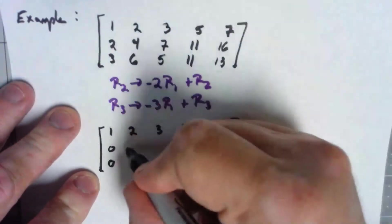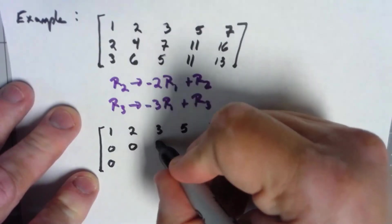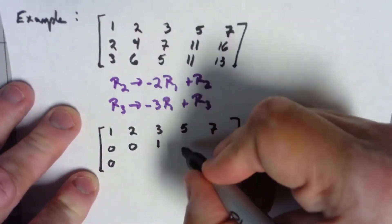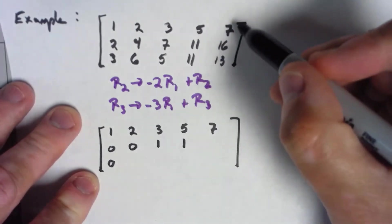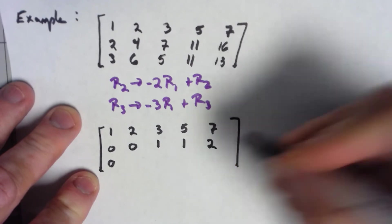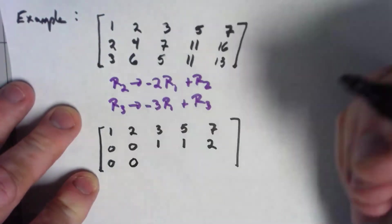Negative 2 times 2 added to 4 is 0. Negative 2 times 3 added to 7 is 1. Negative 2 times 5 added to 11 is 1. Negative 2 times 7 added to 16 is 2.